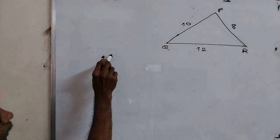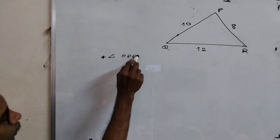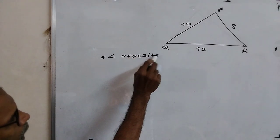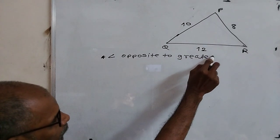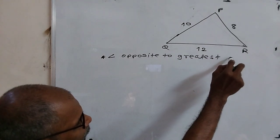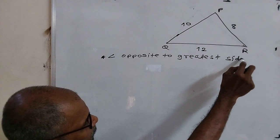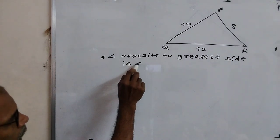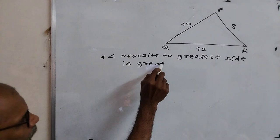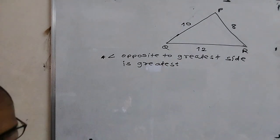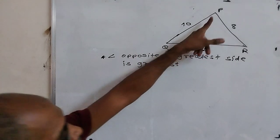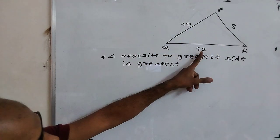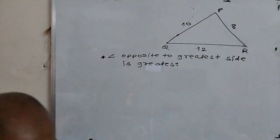First, angle opposite to greatest side is greatest. The sides are 12, 10, and 8. Which is greatest? 12.